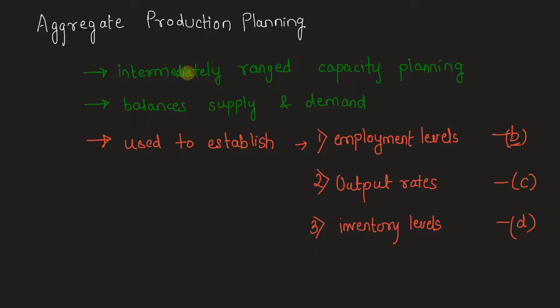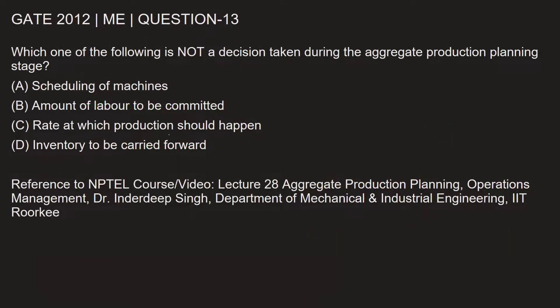But the first option — scheduling of machines — is not done in aggregate production planning, because it is an intermediate-range capacity planning. All three levels (employment, output, inventory) are checked, but scheduling of machines, which is a very detailed operational-level activity, is not addressed in aggregate production planning. Let's go back and mark the correct option.